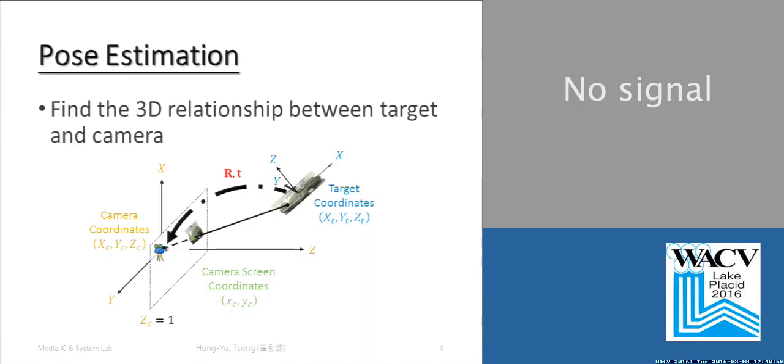Given a target image and a single camera image, we need to find out the 3D relationship between the target and the camera.